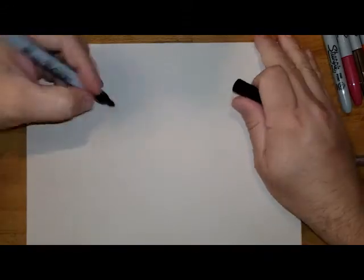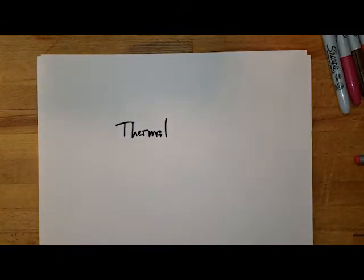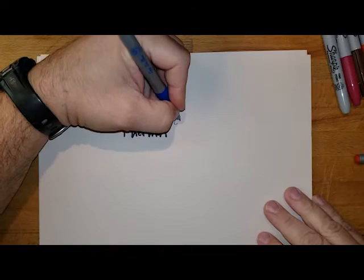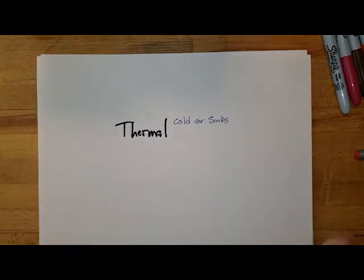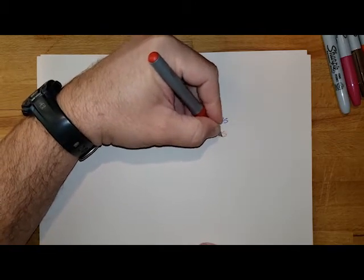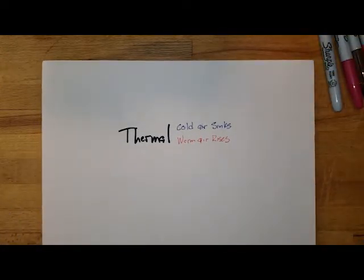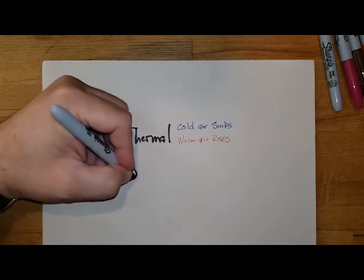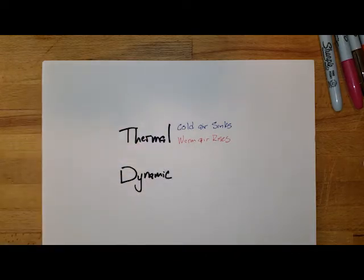There are two different ways that we're going to see pressure systems developing. The first one is thermal — not too complicated, we've talked about this a lot: cold air sinks and warm air rises. The other reason we see pressure systems has to do with movement, which we call dynamic, mainly having to do with the movement of air.